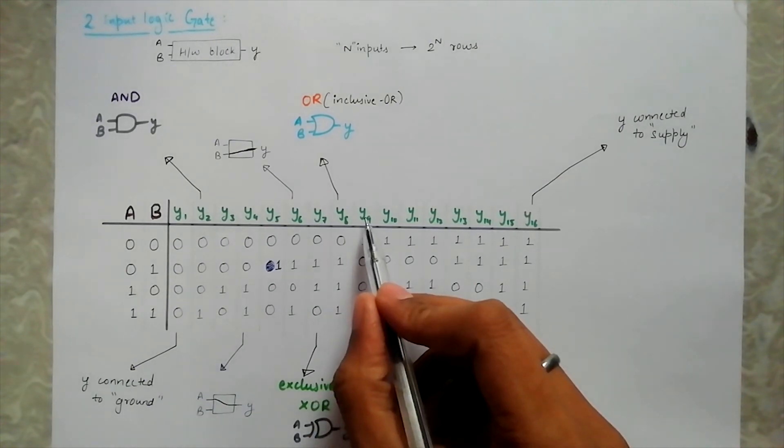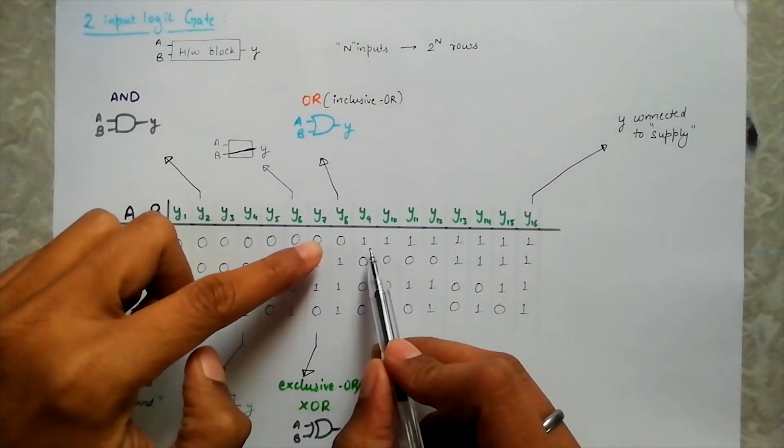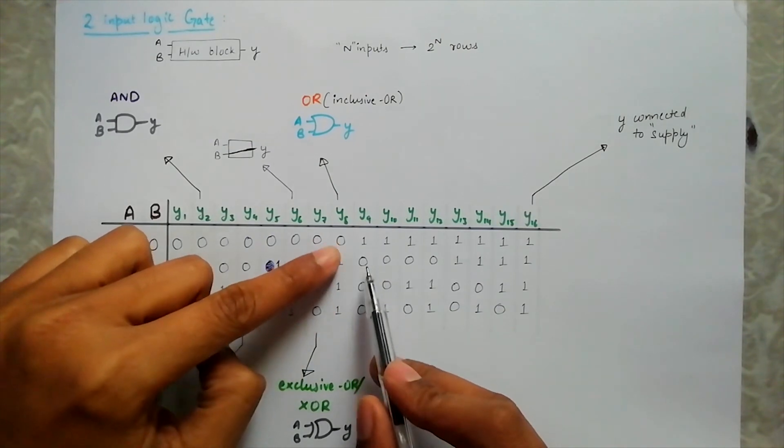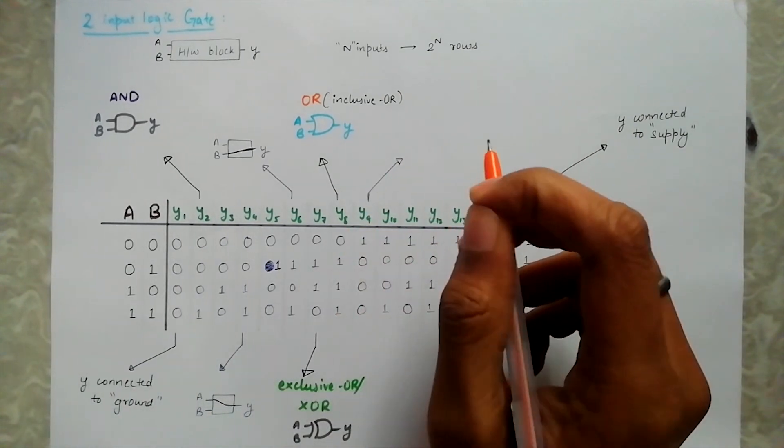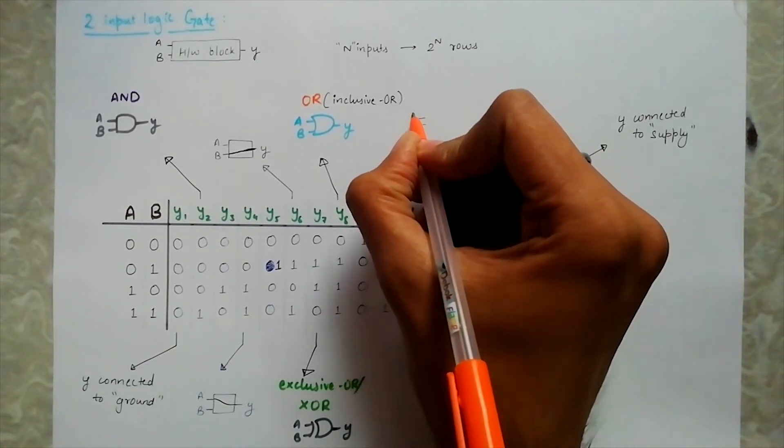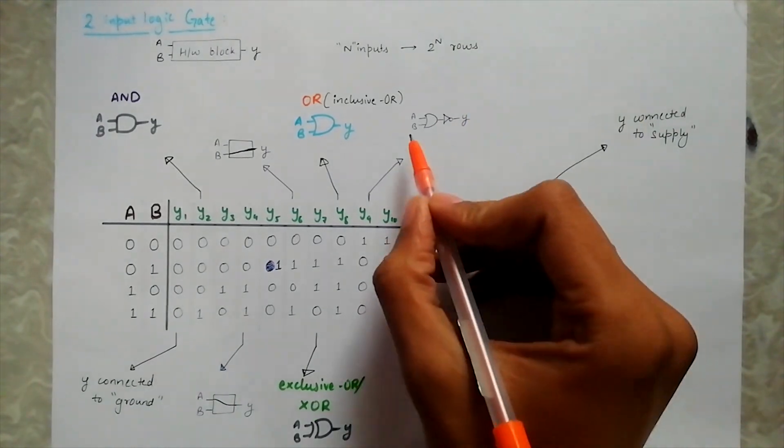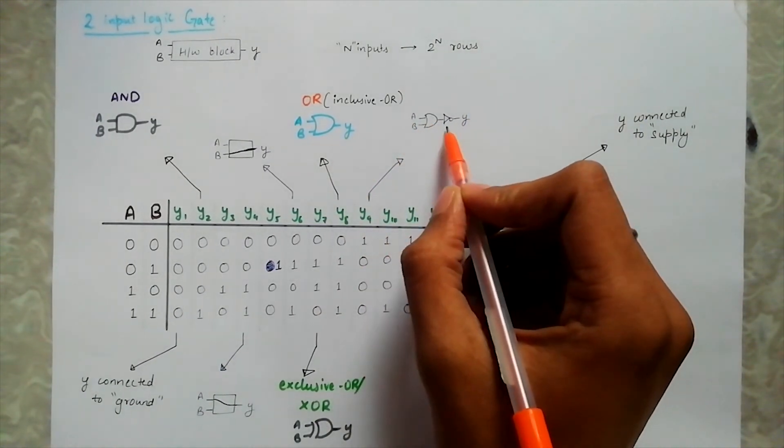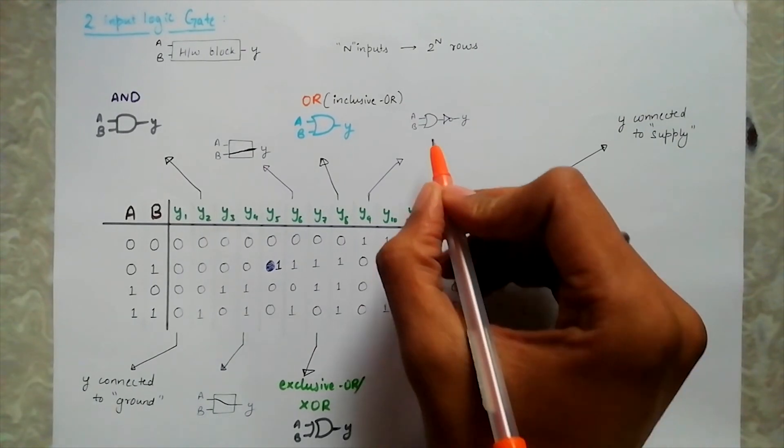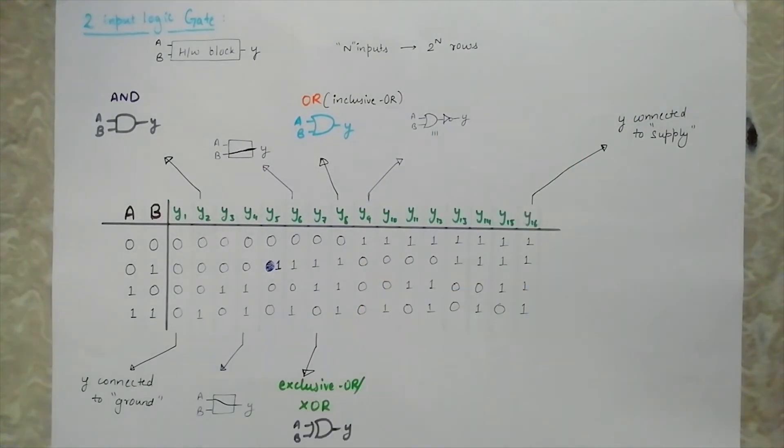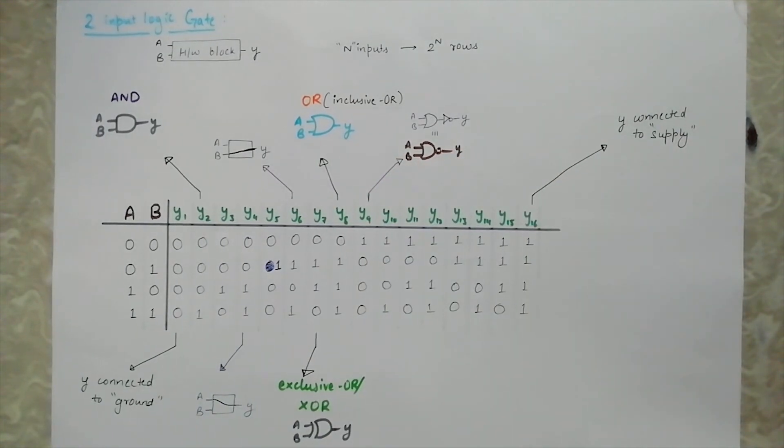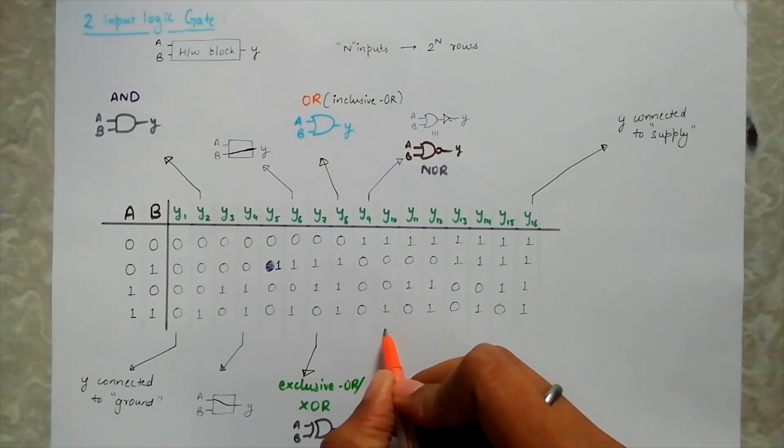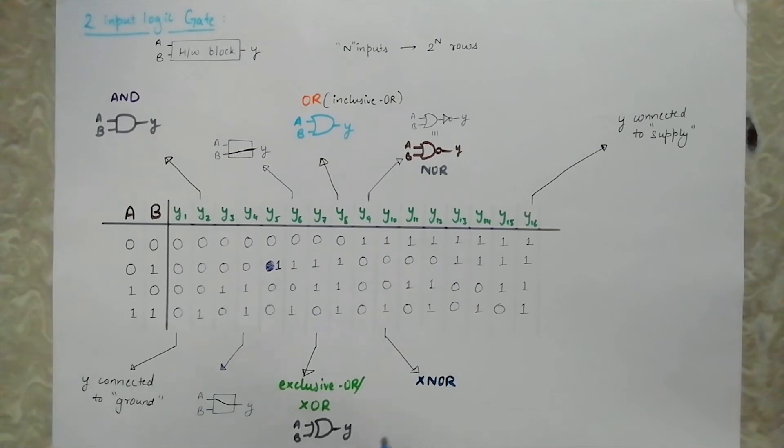Moving on, the ninth case is exactly opposite of eighth. It's as if we have inverted the logic implemented in eighth case to generate this. So basically, if we pass the output of an OR gate to an inverter, which is a single input logic gate we saw previously, the output would be flipped and we would have reached the desired output. We discussed that a circle represents inversion in the symbol. So this is the symbol and it's called a NOR gate. The 10th is the inverse of 7 and is called an EXNOR gate with this symbol.